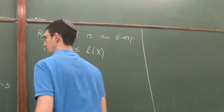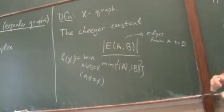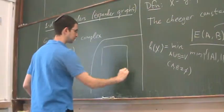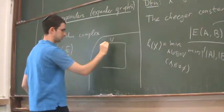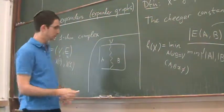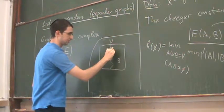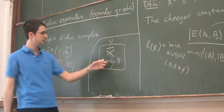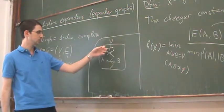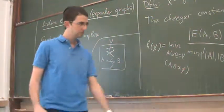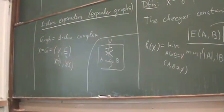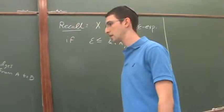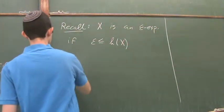Obviously this measures connectivity. If you divide V into two sets A and B, you count the number of edges between them - you want a lot of edges no matter how you partition the vertices, so you always have a lot of edges.